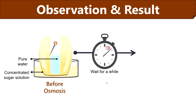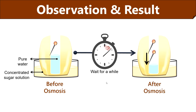Wait for a while to notice any change in the water level. After some time, you can notice that the water level decreases due to the low solvent concentration in the surrounding solution. As the water moves out from the cavity of the potato tuber to the surrounding solution, it confirms the exosmosis.